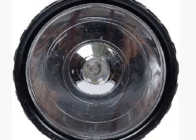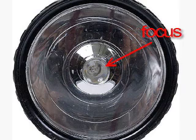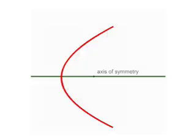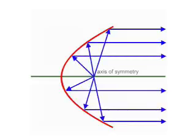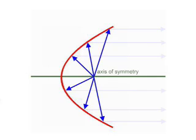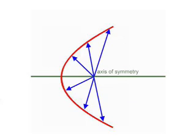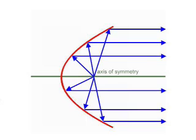The cross-section of a paraboloid of revolution is a parabola. The light bulb in a flashlight is located at the focus of the parabola. One of the properties of a parabola is that rays emanating from the focus point will reflect off the parabola parallel to the axis of symmetry. These parallel rays of light are what cause the beam of light that is seen.